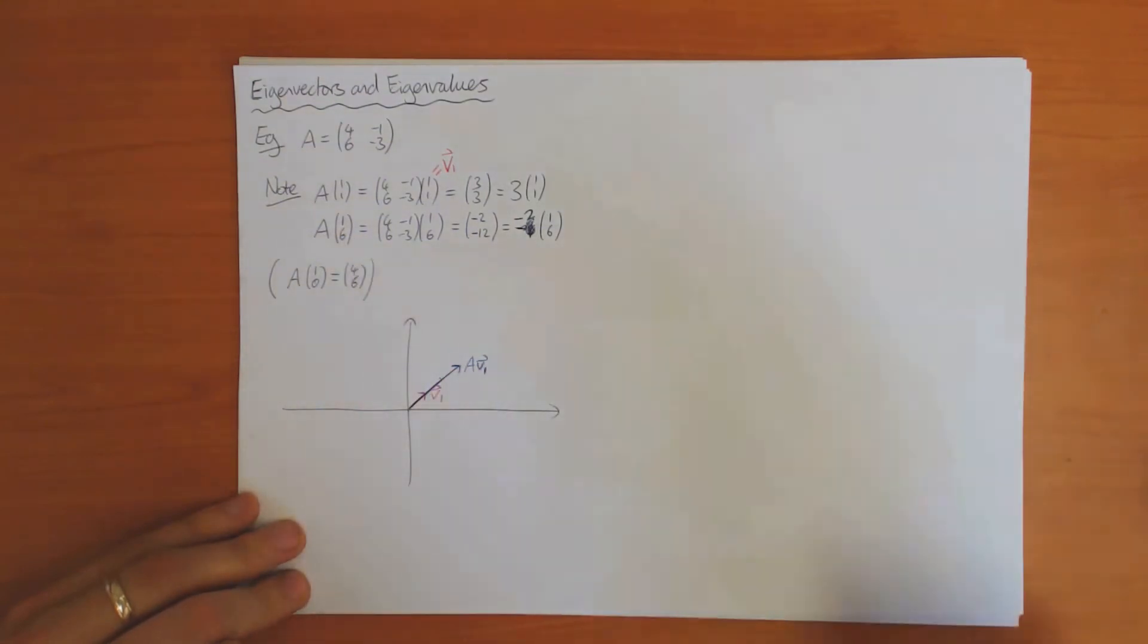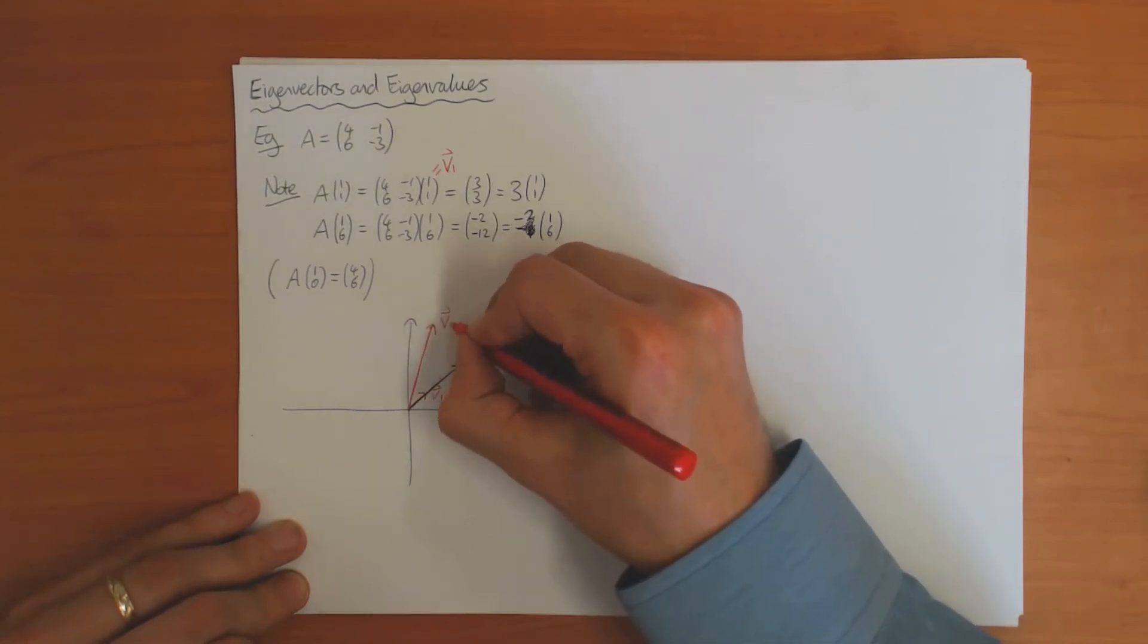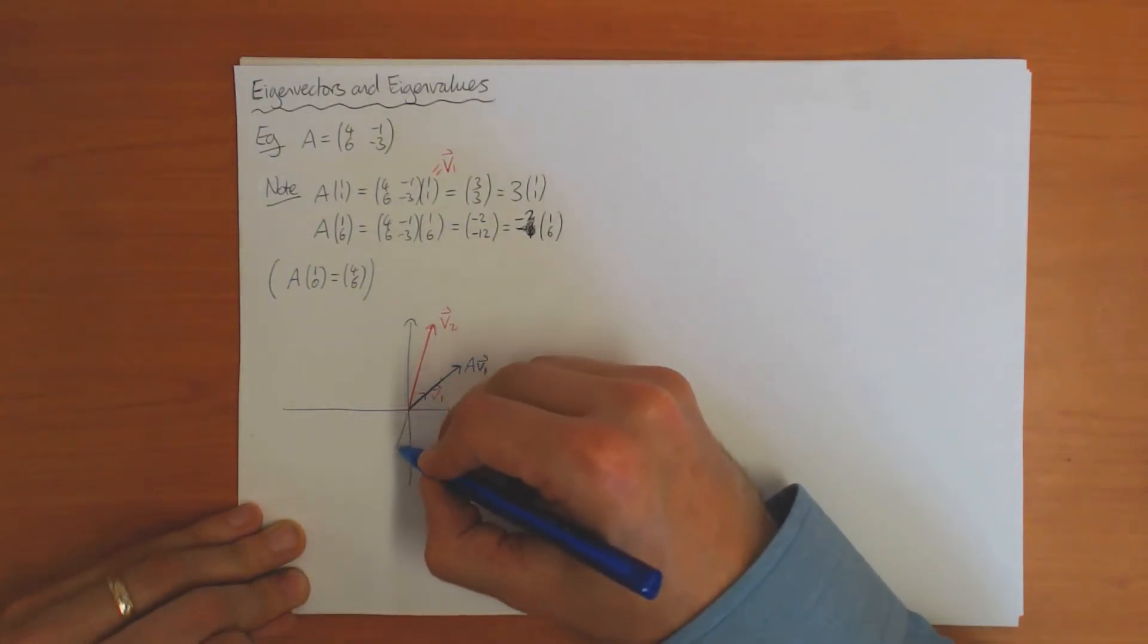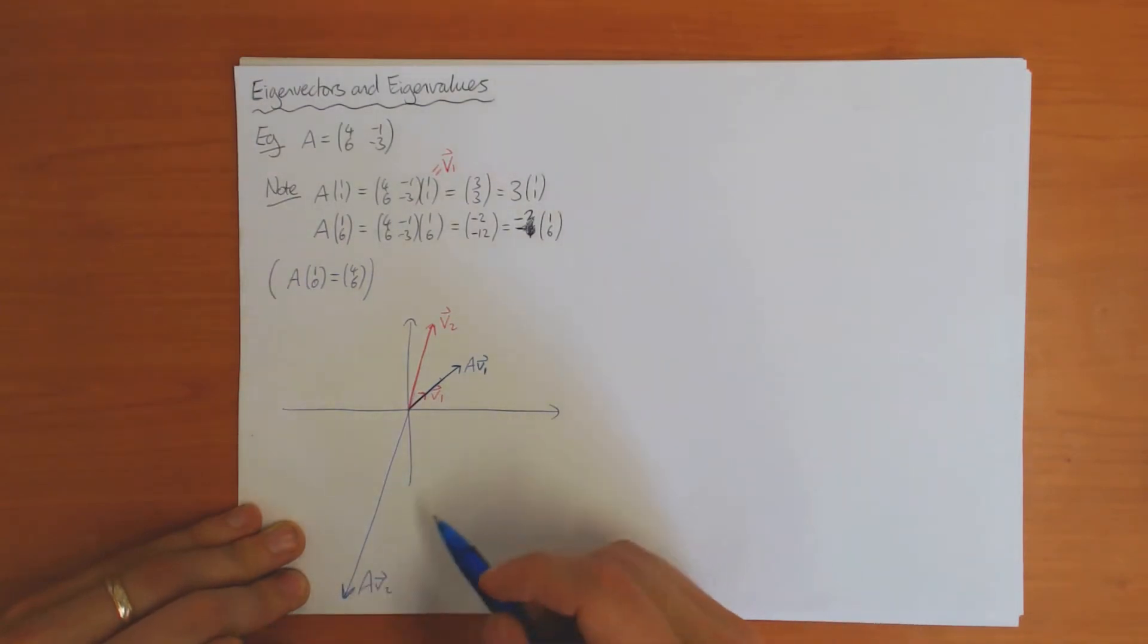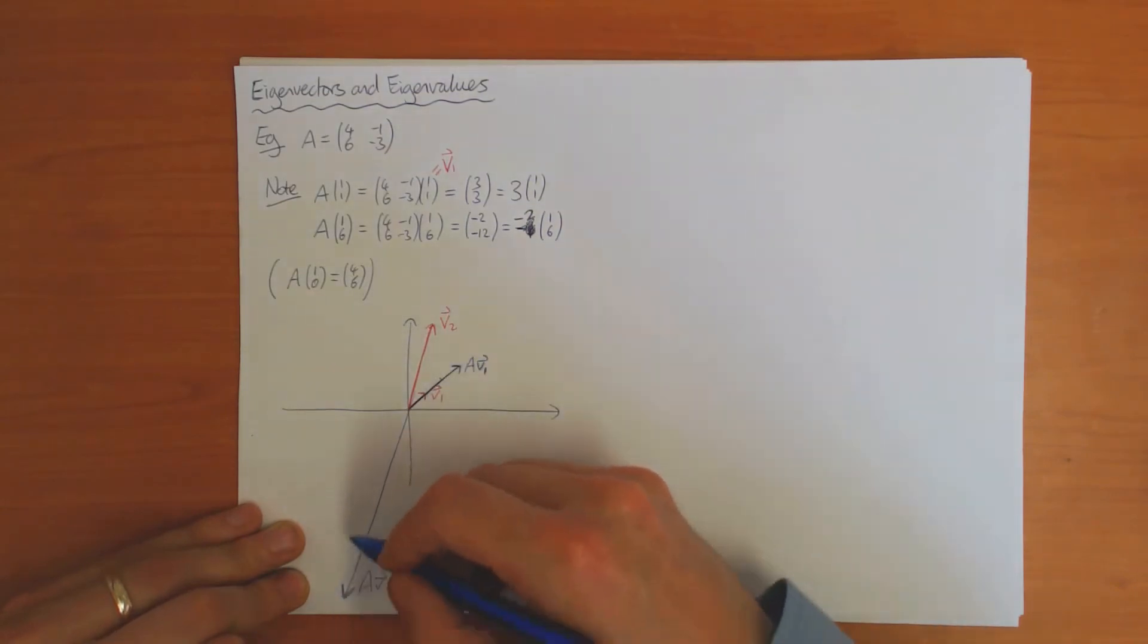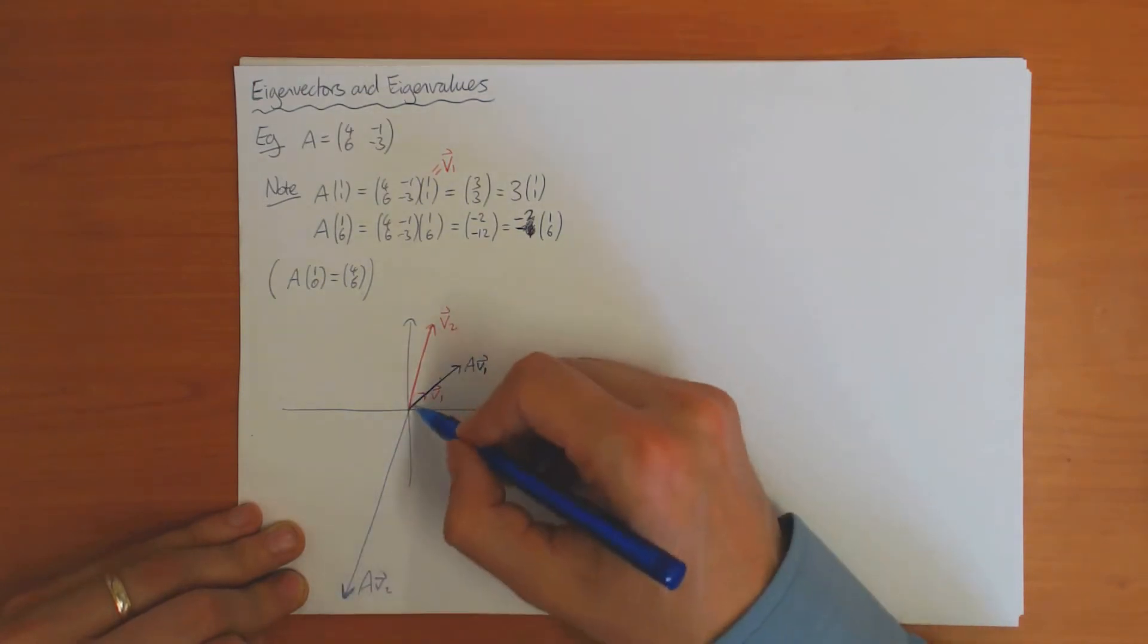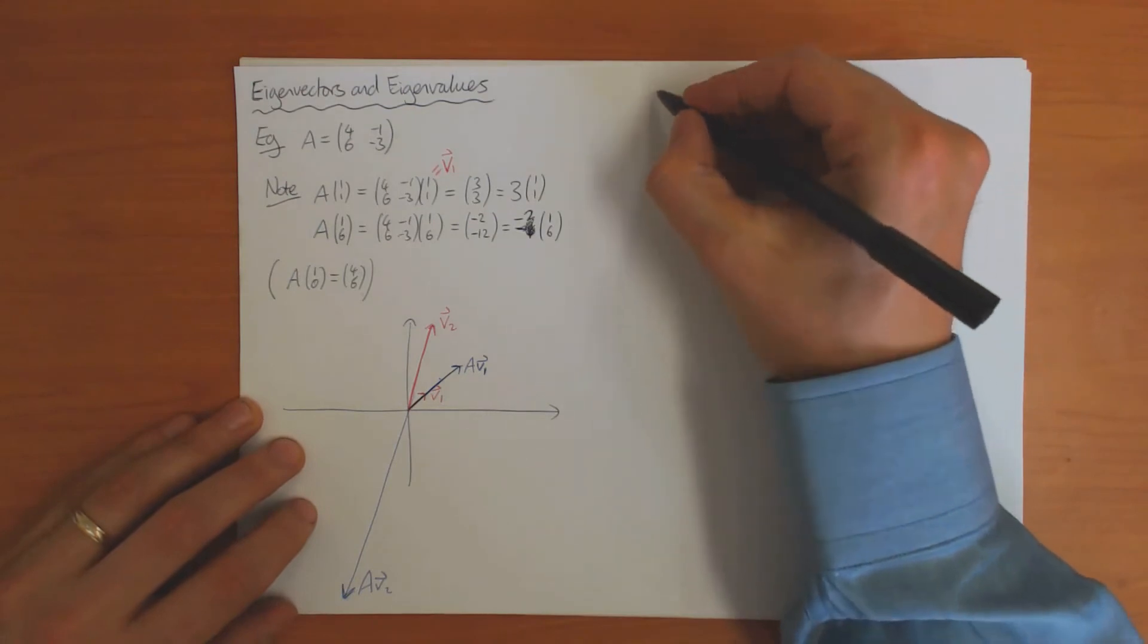The same is true of the second vector (1,6). So that's 1 and then 6 is somewhere up here—a vector like this. This is vector v₂, and this one is the same vector multiplied by -2 after the transformation, so it will be in this direction down here, twice as long. This is Av₂. These v₁ and v₂ are special vectors such that the direction doesn't change under transformation A. These vectors are what we call eigenvectors.